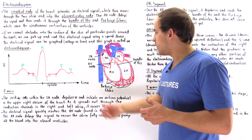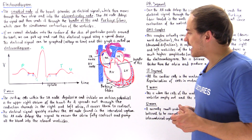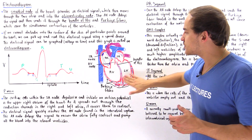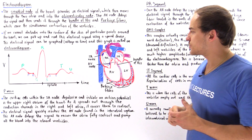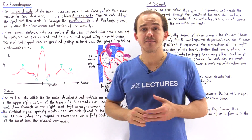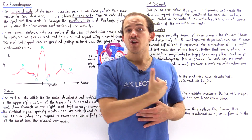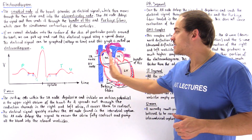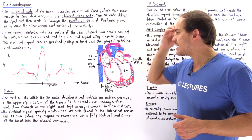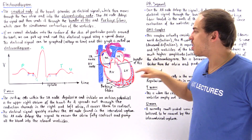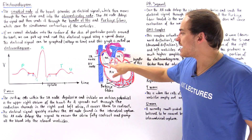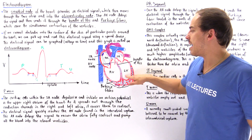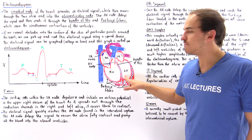Taking a cross section of the heart exposes the four different chambers. Examining the heart from this angle, we have the right side and the left side: the right atrium, right ventricle, the left atrium, and the left ventricle.